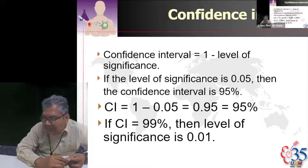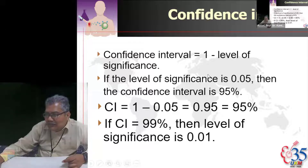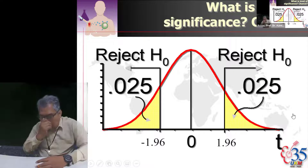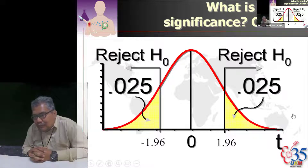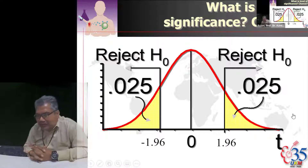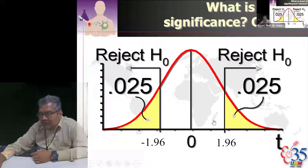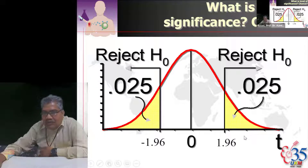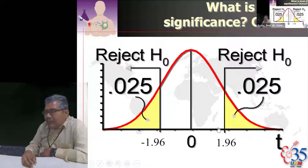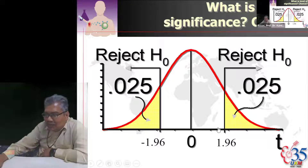If your confidence interval is 99%, your level of significance is set at 0.01. Why set at 0.05? You are 95% sure the difference detected is due to real difference, not chance. So 5% is due to chance — that 5% is at both ends of the normal curve. The cut-off point is negative 1.96 to the left and positive 1.96 to the right. Remember that number — 1.96 will come up again in sample size, chi-square, and t-test.